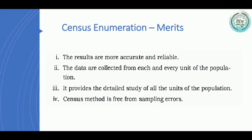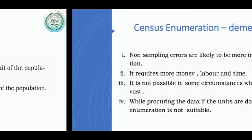The merits of census enumeration are: first, the results are more accurate and reliable. Second, the data are collected from each and every unit of the population. Third, it provides a detailed study of all the units of the population. Fourth, the census method is free from sampling errors — that is, the errors which happen when you do sampling are not present in census enumeration.